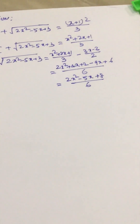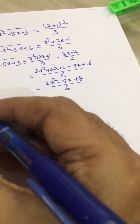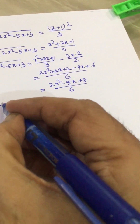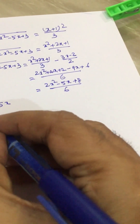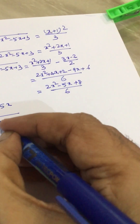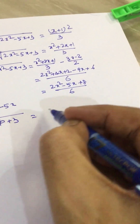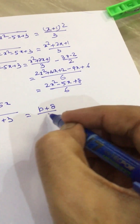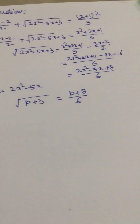If we put p equal to 2x squared minus 5x, then we can write this equation as p plus 3 equal to 3 plus 8 over 6. Right.